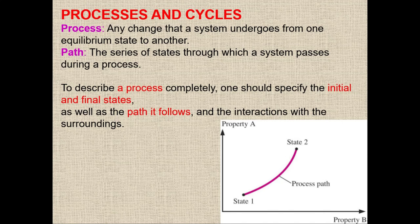Along with process, we have to define another term called path. Path is basically the series of states through which a system passes during a process. The path can be different, but we have to define the initial and the final states for a complete process. To describe a process completely, there should be initial and final states, as well as the path and the interaction with the surroundings.